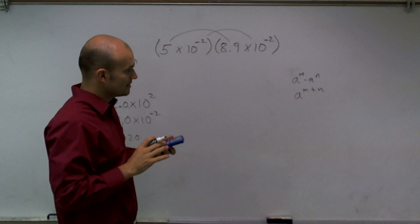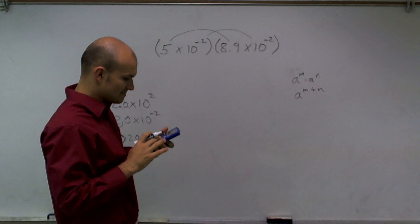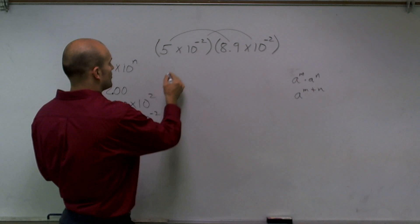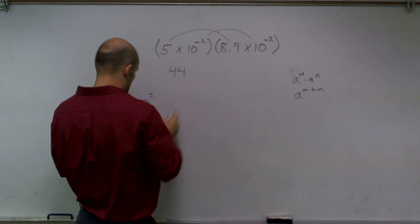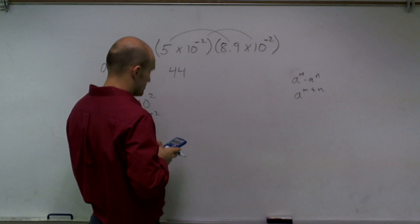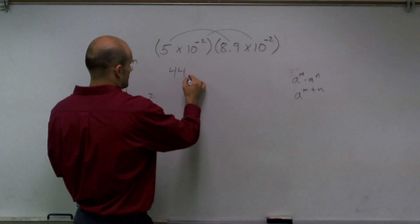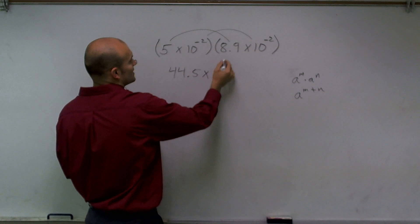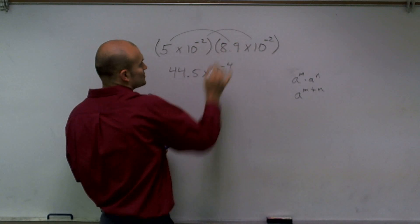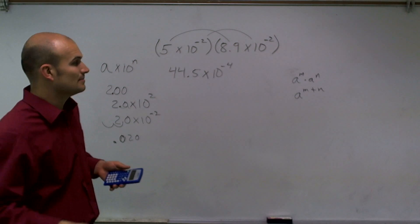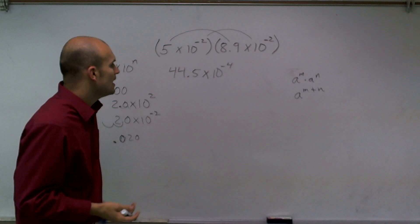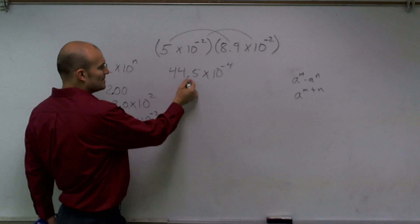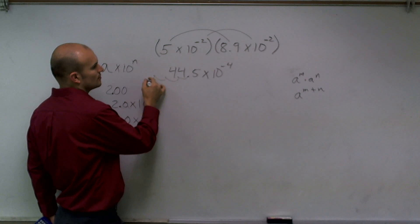So I'm going to do 5 times 8.9. And when I do 5 times 8.9, I get 44.5 times... And then I'll add—this will be 10 to the negative 4, as negative 2 plus negative 2. I'm adding them, which is going to give me negative 4.